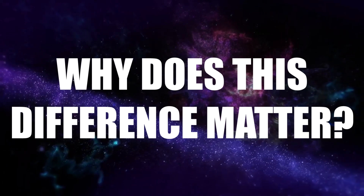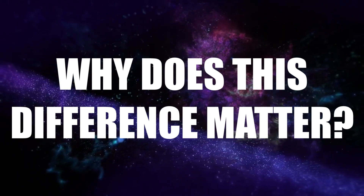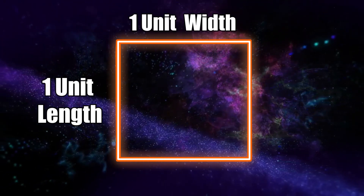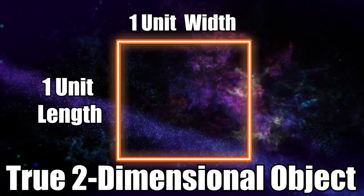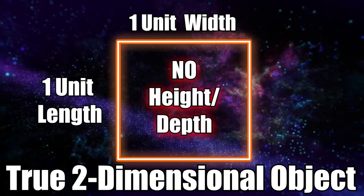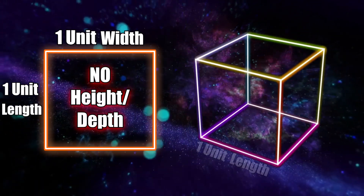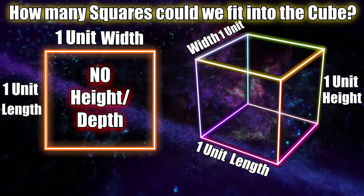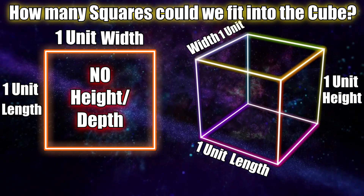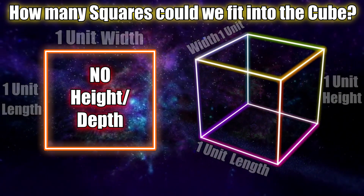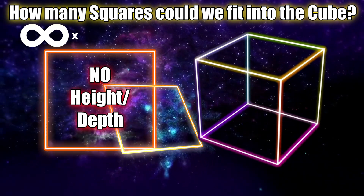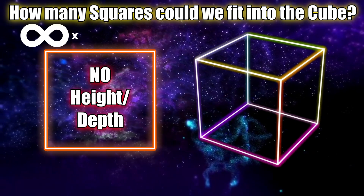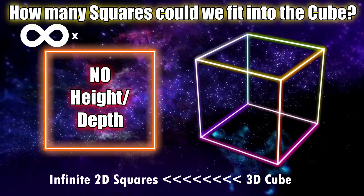So why does this difference matter? Let me give you an example. Let's take a square with a length and width of one unit. This square is a true two-dimensional object, and thus has absolutely no height at all. If we compare it to a cube with one unit in length, width, and height, how many squares could we fit into the cube? The square has no height — zero height — so even an infinite amount of squares stacked on top of each other still wouldn't make a cube. To ignore dimensionality is to ignore just how many squares the cube can fit within it.